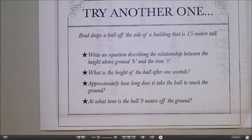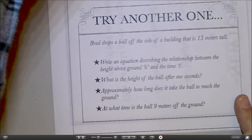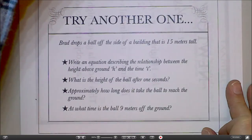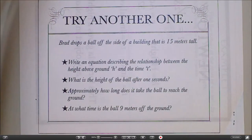I'll run through the second example. This is from your notes packet, the one we didn't do in class yesterday. I wanted to run through this and make sure you could see the whole process beginning to end here. So this is another Newton's formula example. It says Brad drops a ball off the side of a building that is 15 meters tall.